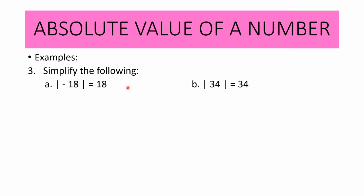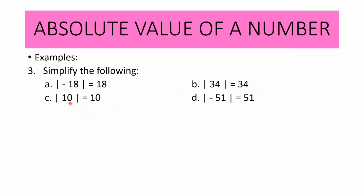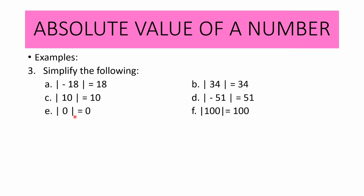Let us have the examples. The absolute value of negative 18 is equal to 18. The absolute value of 34 is equal to 34. The absolute value of 10 is equal to 10. The absolute value of negative 51 is equal to 51. The absolute value of 0 is equal to 0. And the absolute value of 100 is equal to 100.